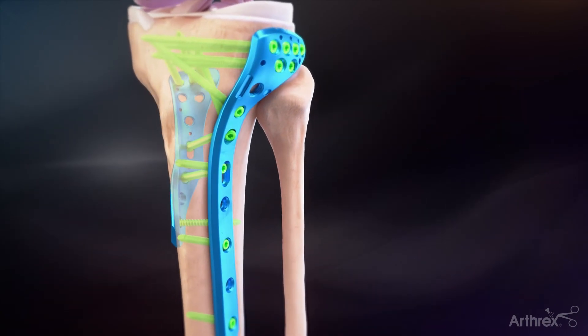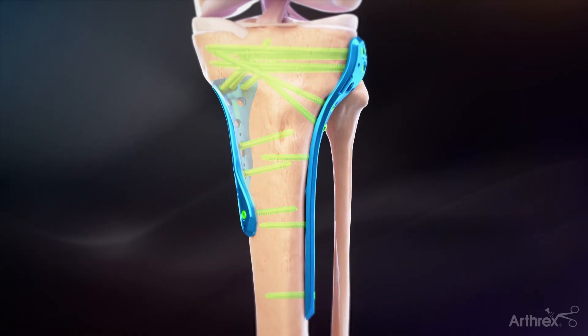The lateral plate has two rows of proximal rafting screws and two kickstand screws to address various fracture patterns.